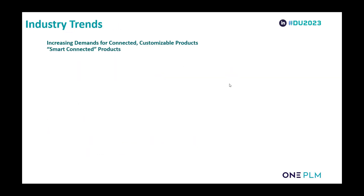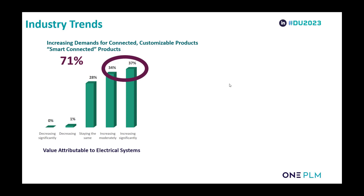Let's start then and look at the industry trends. What we're seeing is an increase in demand for connected, customizable, smart connected products. In a survey of RSMBs, we found that 71% said the value attributed to electrical systems in their products has been increasing, and 37% said it's been increasing significantly.